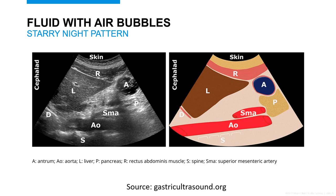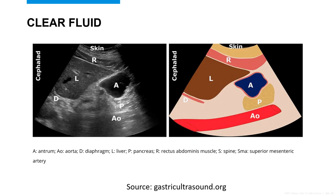That air came from either the patient swallowing while drinking, or from drinking an effervescent liquid such as sparkling water. Here we see the homogeneous dark hypoechoic appearance of clear liquid without any air. It's natural for your stomach to create clear gastric fluid. As a clinician, we need to discern whether this clear liquid is just naturally produced gastric fluid or whether someone recently drank a significant amount of clear liquids.